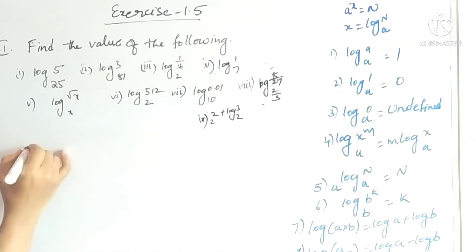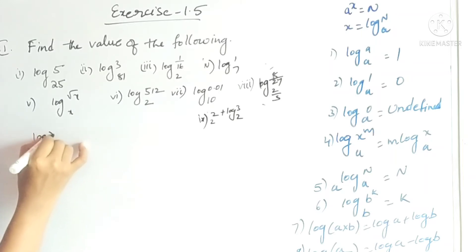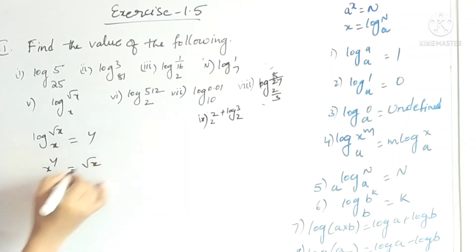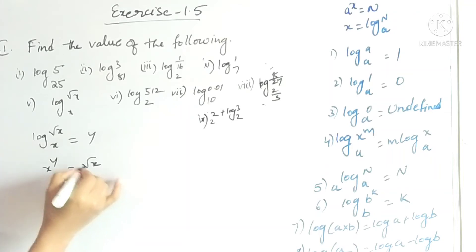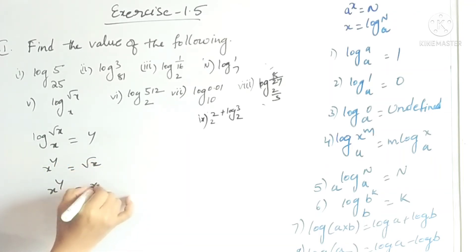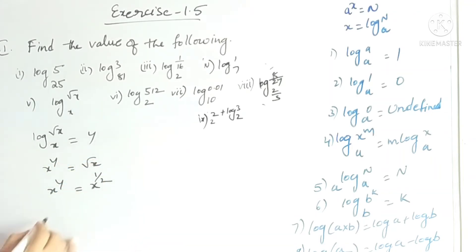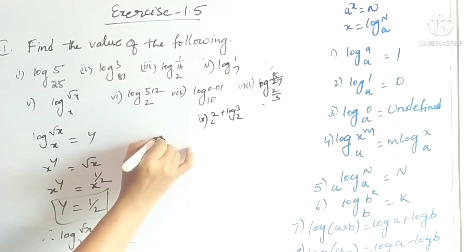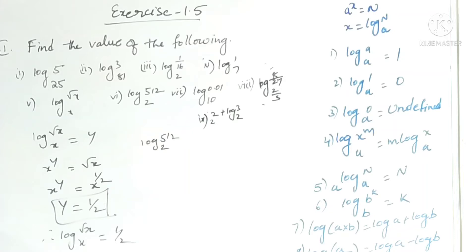For log(√x) base x, since x terms are present, let it be y. Then x to the power y equals √x. Writing square root as a power: x^y equals x^(1/2). Therefore y equals 1/2. So the value of log(√x) base x is 1/2.